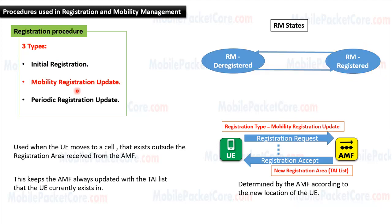Now let's learn the Mobility Registration Update Procedure. This procedure is used when the UE moves to a cell that exists outside the registration area received from the AMF. In this case, the UE sends a registration request message to the AMF, including registration type equals to Mobility Registration Update. At the end of the procedure, the AMF sends a registration accept message to the UE, including a new registration area that contains a tracking area list determined by the AMF according to the new location of the UE.